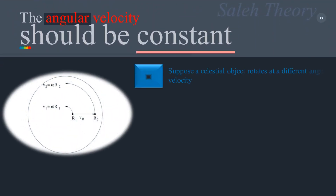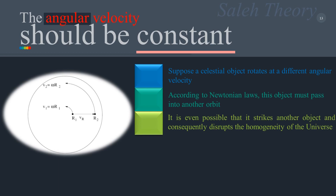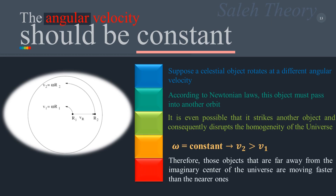Suppose a celestial object rotates at a different angular velocity. According to Newtonian laws, this object must pass into another orbit. It is even possible that it strikes another object, consequently disrupting the homogeneity of the universe. So angular velocity must be constant, meaning objects that are far away from the imaginary center of the universe are moving faster than the near ones.